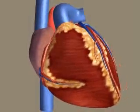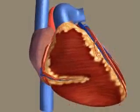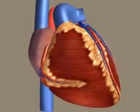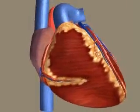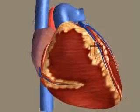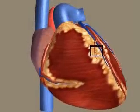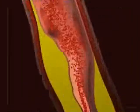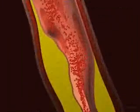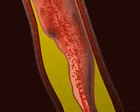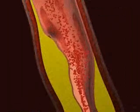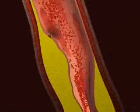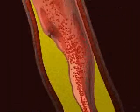Because the heart must continually beat, the coronary arteries serve a critical role, supplying the constantly active heart muscle with oxygenated blood. As we zoom in to observe the interior of this diseased coronary artery, notice the partially restricted blood flow due to the atherosclerotic plaque in the arterial wall.